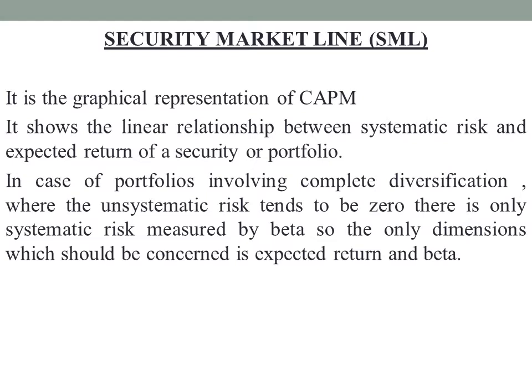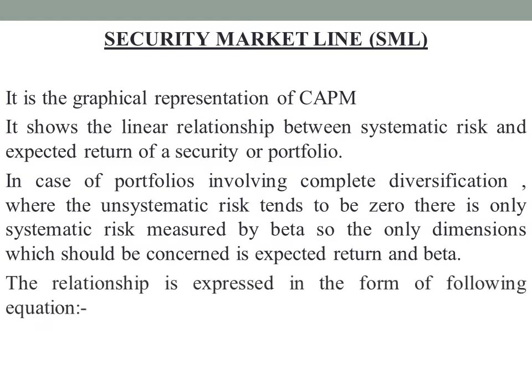The relationship is expressed in the form of the following equation: ri' = rf + β(rm' − rf). This is the same formula used in the CAPM model to calculate expected return. We are using the risk-free asset to invest, so the formula gives us the risk-free rate of return plus systematic risk beta multiplied by (rm' − rf).